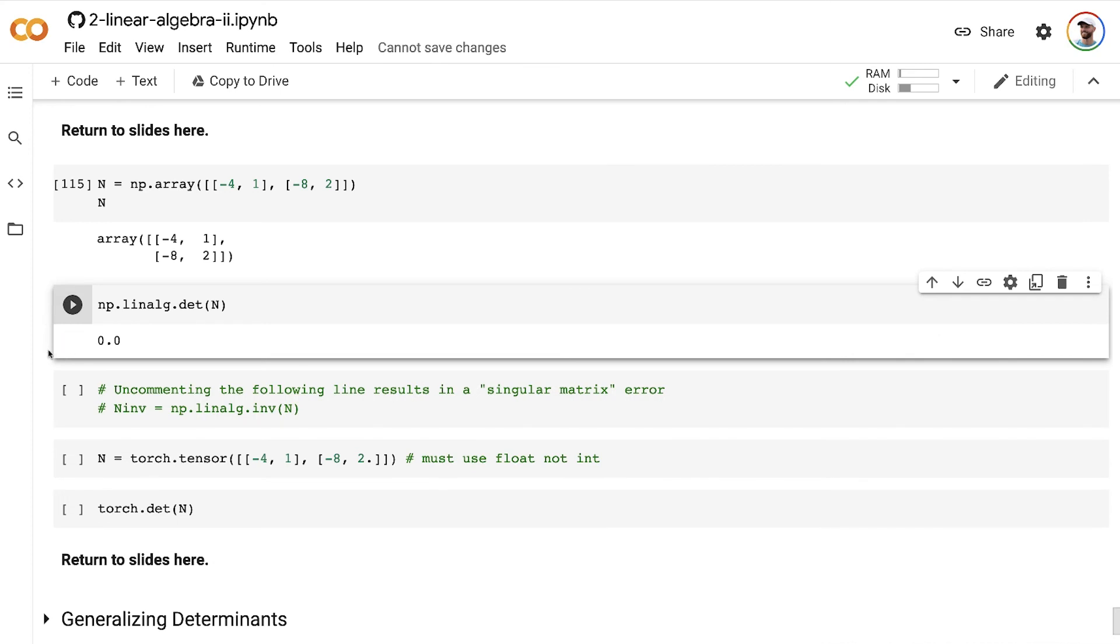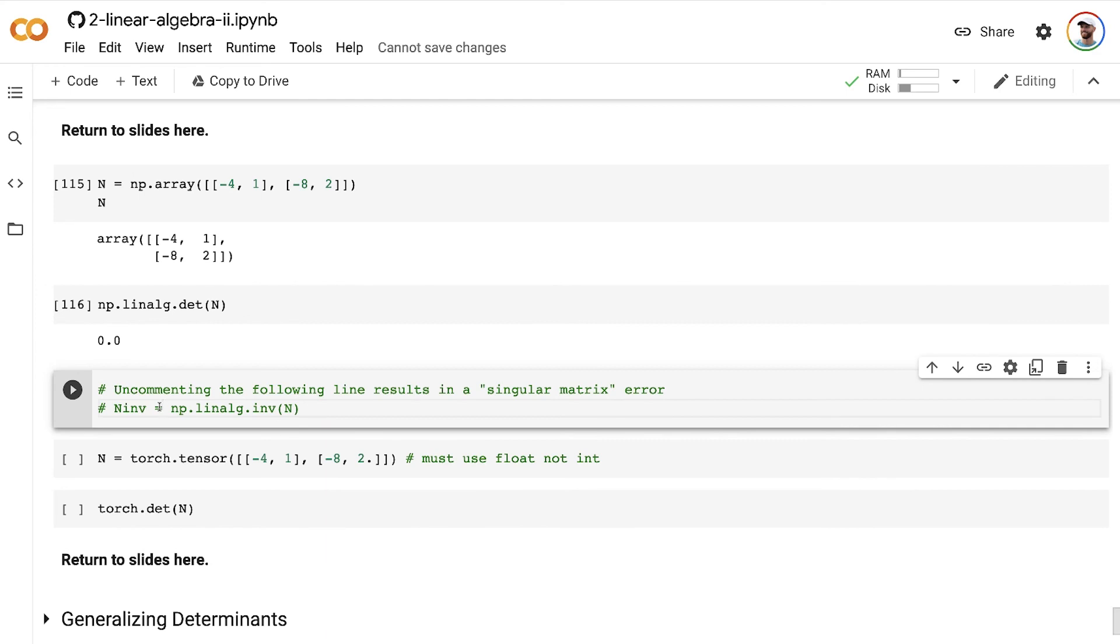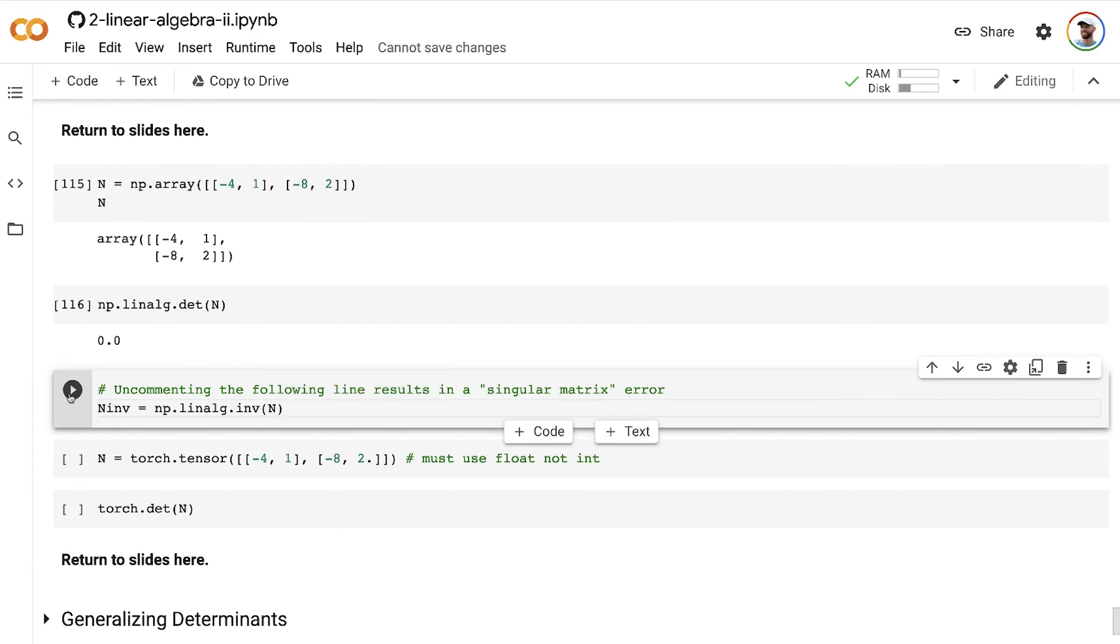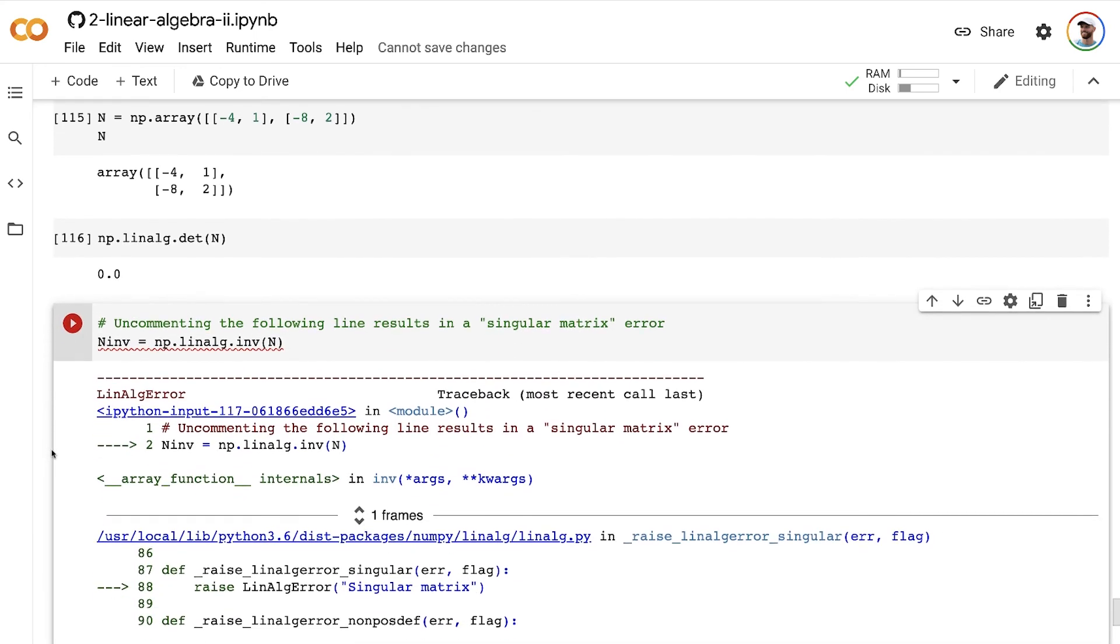When we calculate the determinant, we get a 0, just like we did calculating by hand. You're welcome to uncomment this line of code here and try running it so you can try to invert the matrix N.